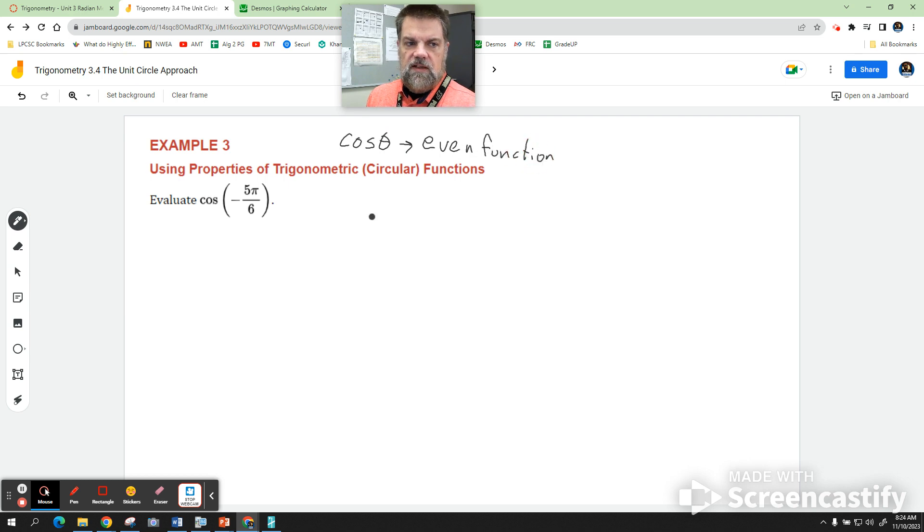Okay, so cosine of negative 5 pi over 6 is equal to cosine of 5 pi over 6. They're going to be the exact same value.